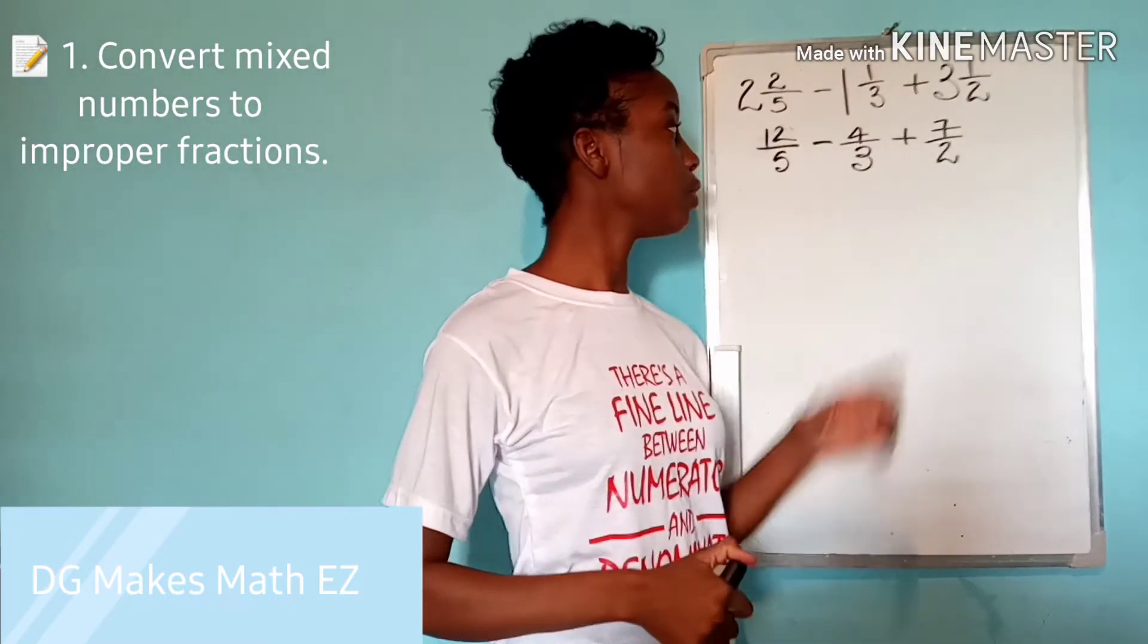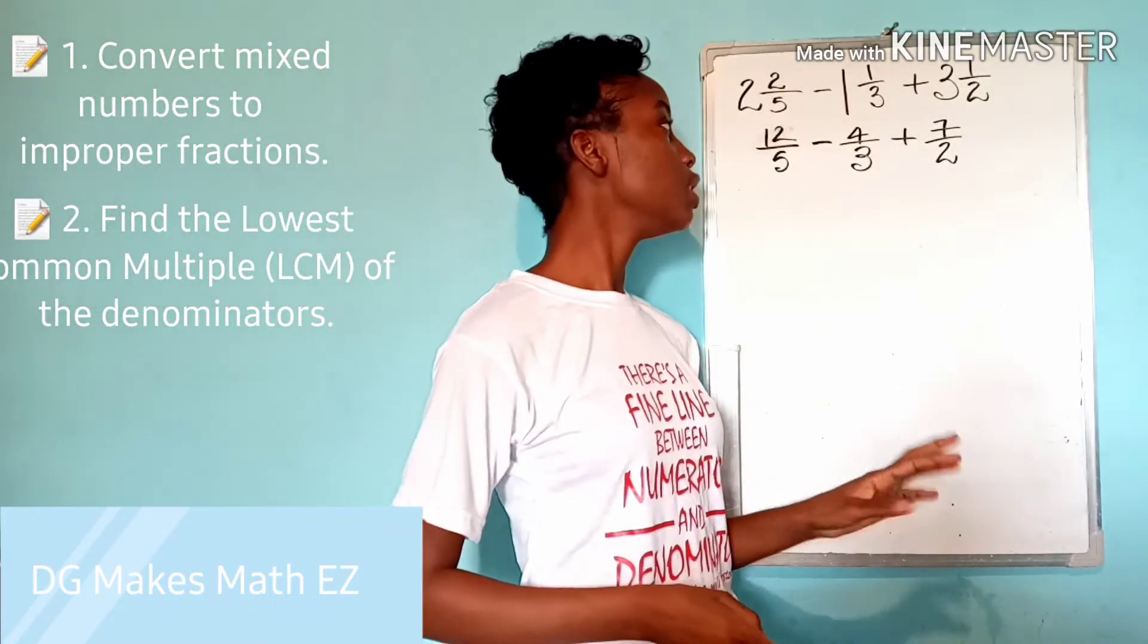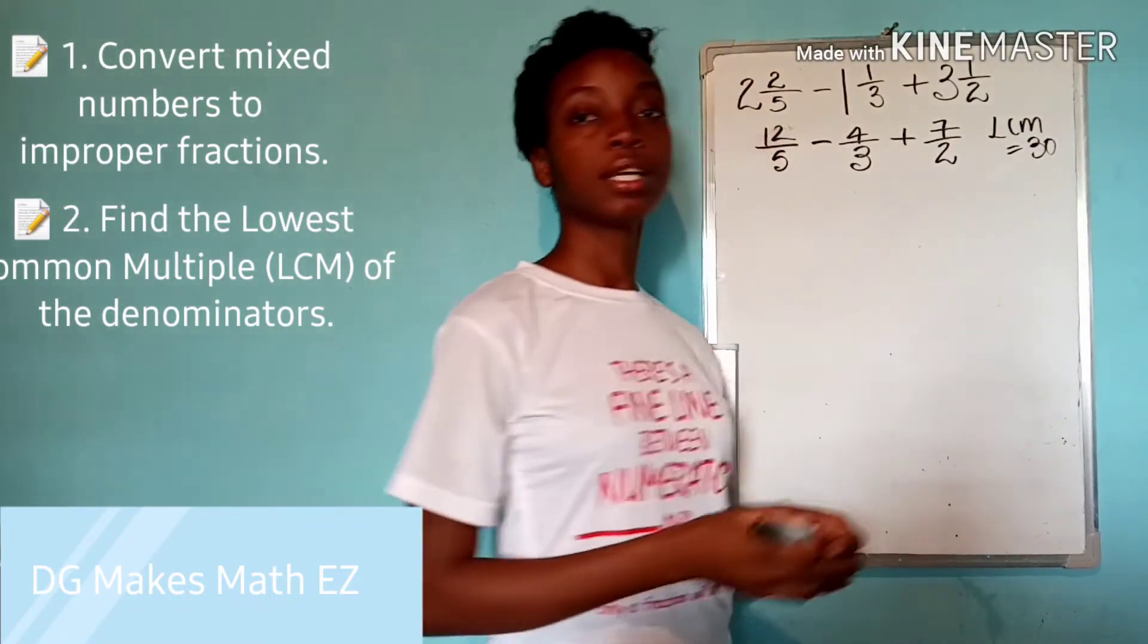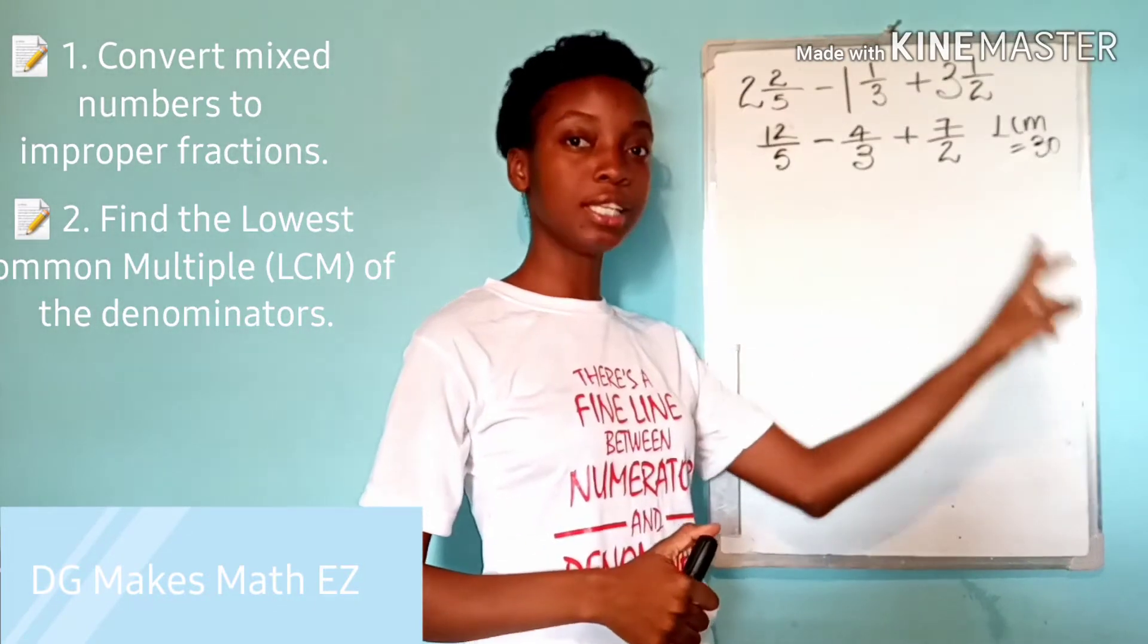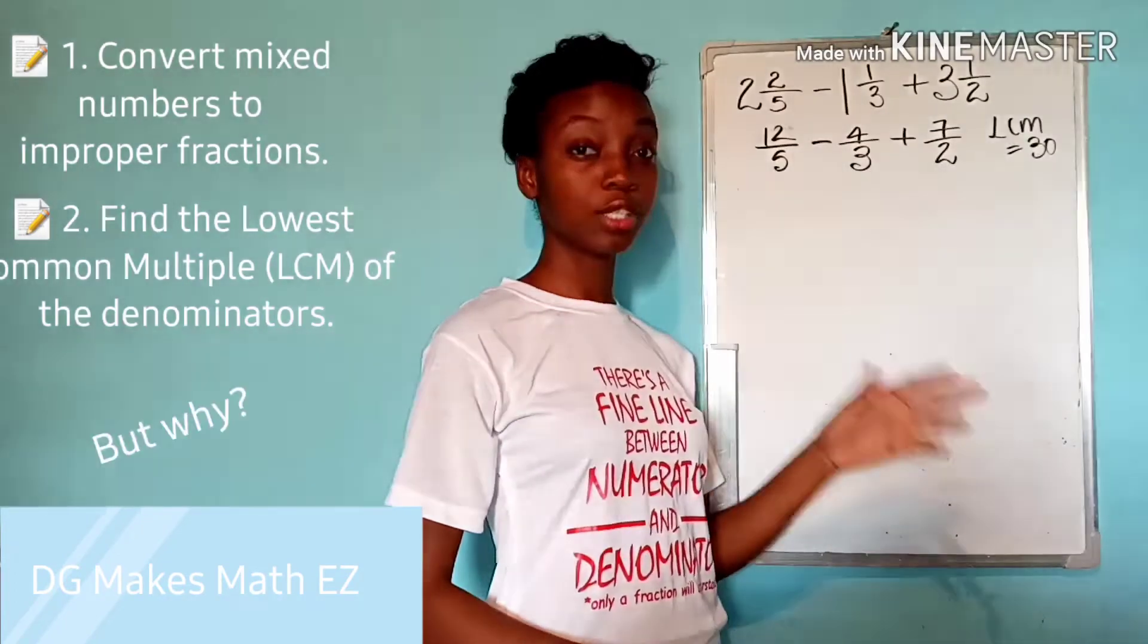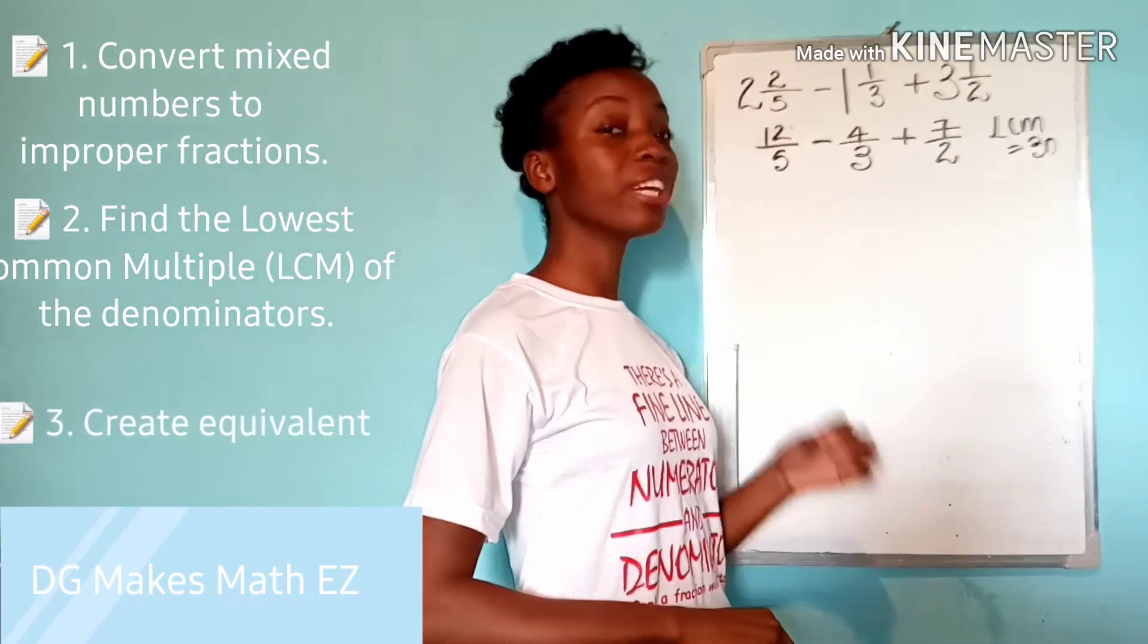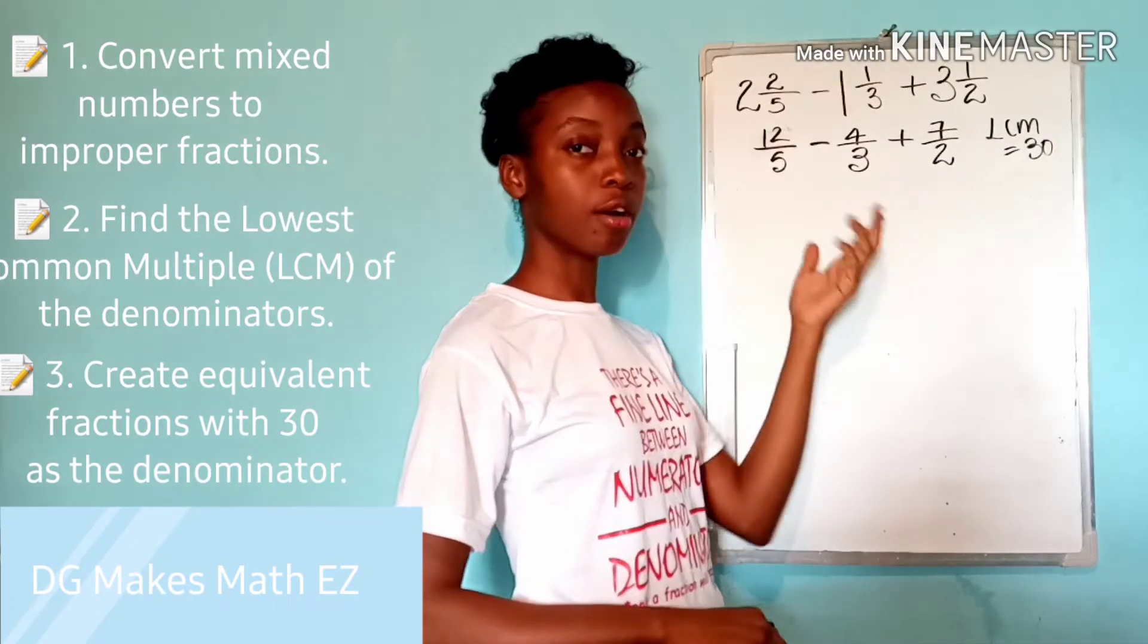At this point what you are going to do is try to find the LCM for five, three and two for all our denominators. So the LCM for five, three and two is 30. What are we going to do with that 30? We're going to ensure that all these denominators become 30. We're going to be creating equivalent fractions for each of these fractions with a denominator of 30.